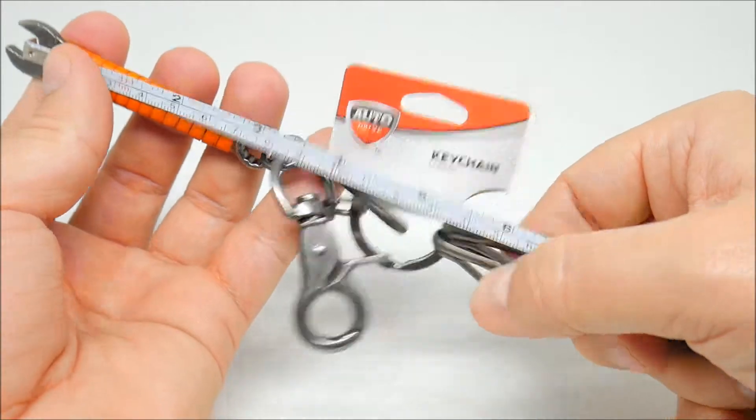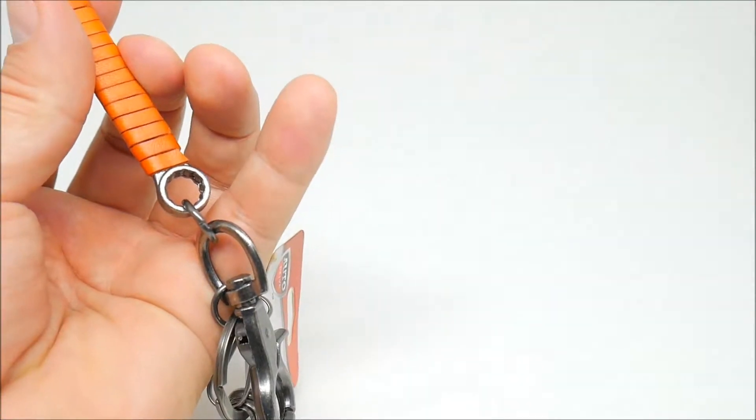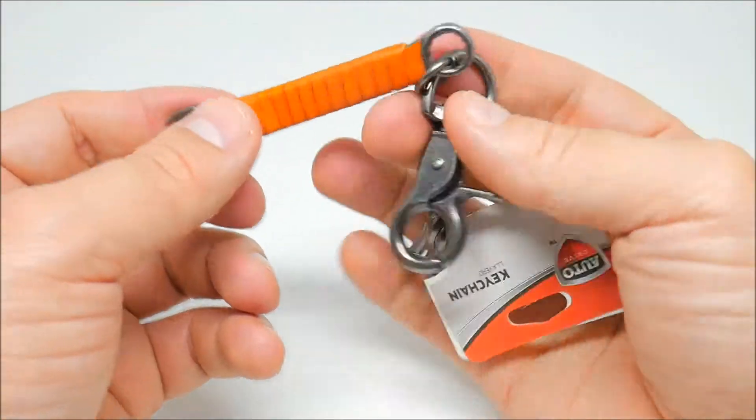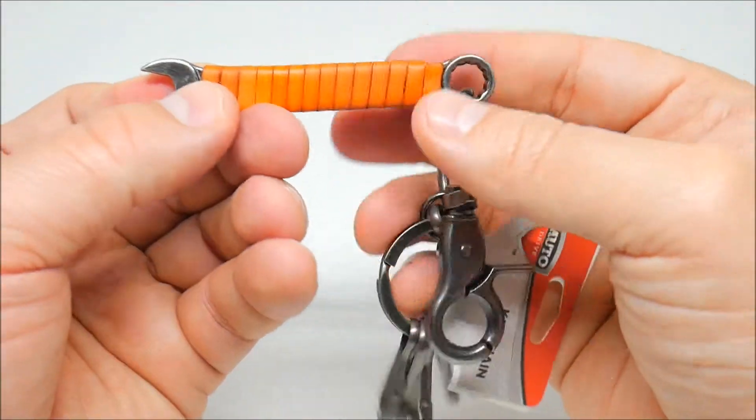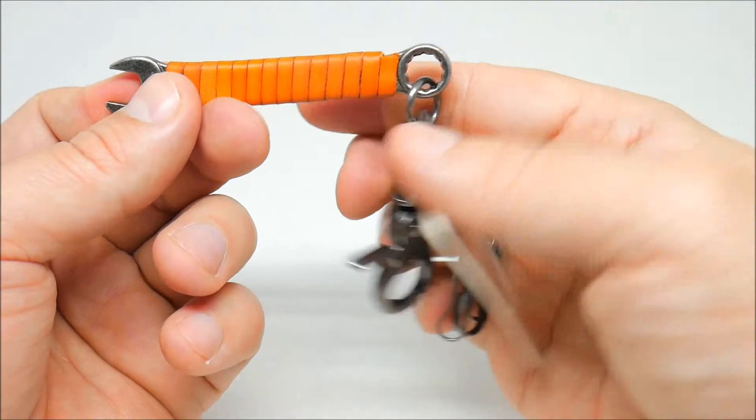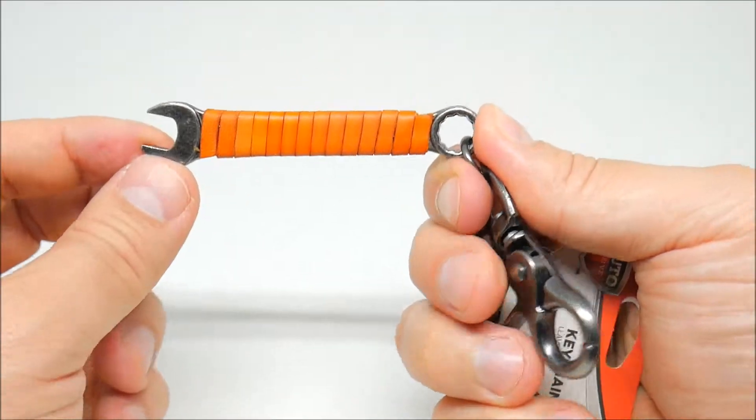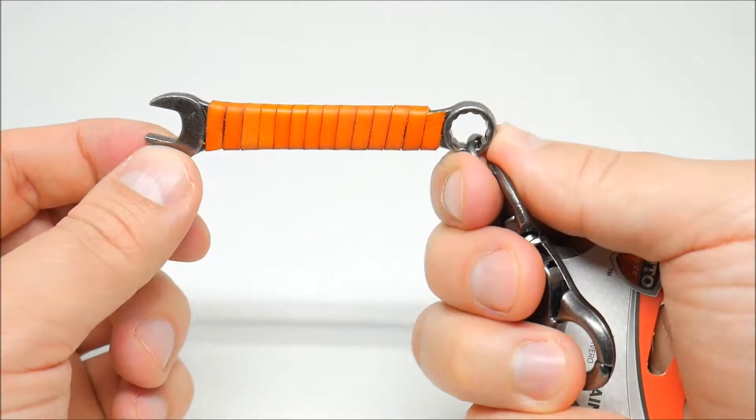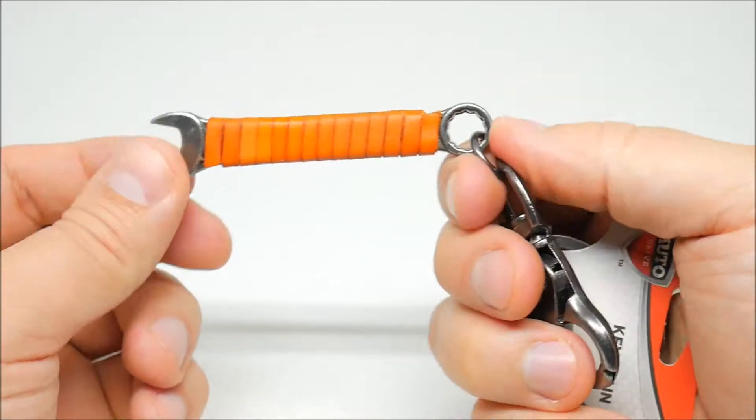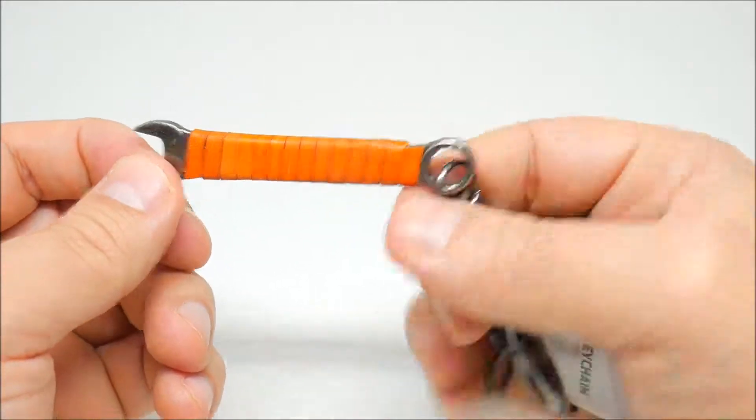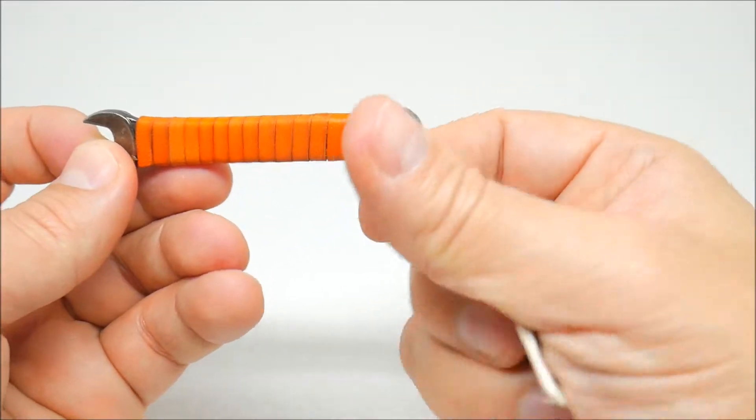Seven inches. There you have it guys, the Auto Drive wrench keychain. If you're a mechanic, this will be the perfect keychain for you. You can use this in your house, for your bike, for your car—very handy tool to have.